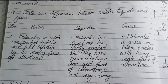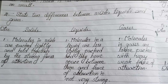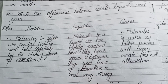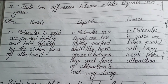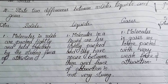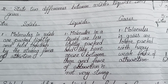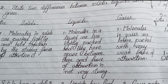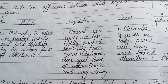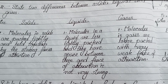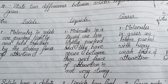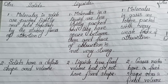Number 2: State two differences between solids, liquids, and gases. Point 1 — Solids: molecules are packed tightly and held together by strong forces of attraction. Liquids: molecules are less tightly packed and have space between them with weaker forces of attraction. Gases: molecules are loosely packed with very weak force of attraction.